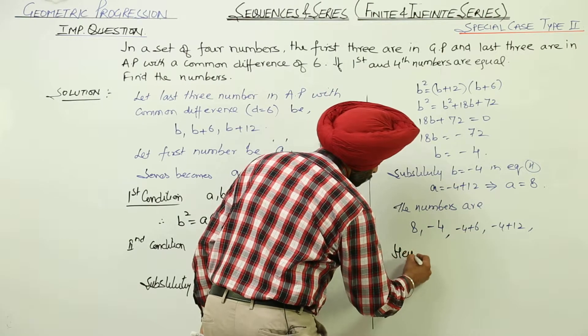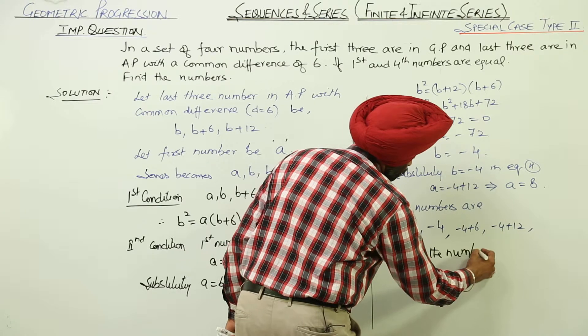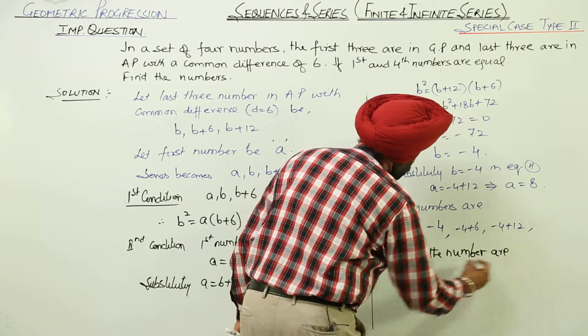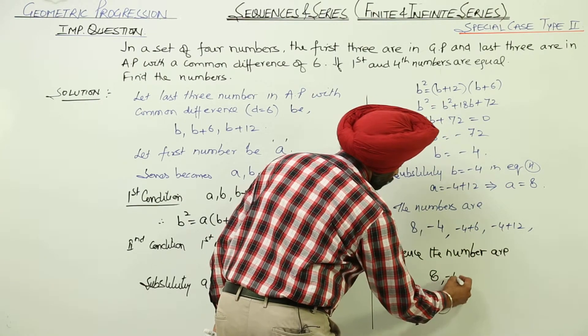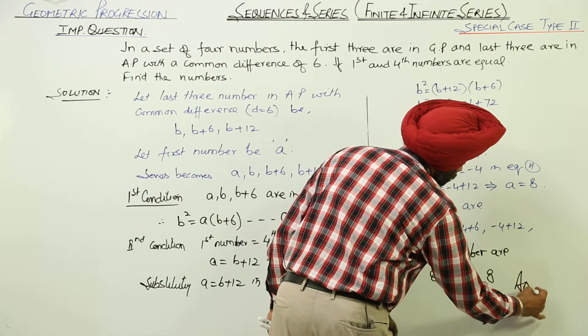Minus 4 plus 6 minus 4 plus 12. Hence, the numbers are 8, minus 4, 2 and 8. This is the answer.